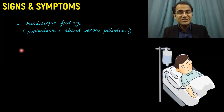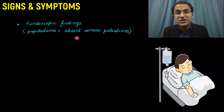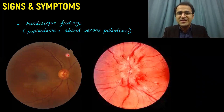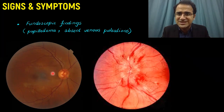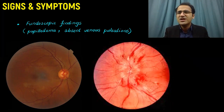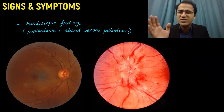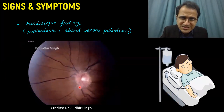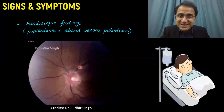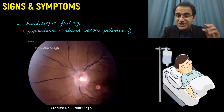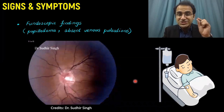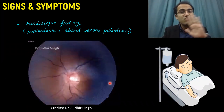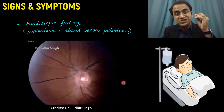Other findings in meningitis include fundoscopic findings. You may see papilledema — blurring of the margins of the optic disc — where the normal circular optic disc is no longer clearly defined. You may also see absent venous pulsation. Normally you can appreciate pulsation within the optic disc, but in a patient with papilledema or meningitis, this venous pulsation will be absent, which is a very important finding.